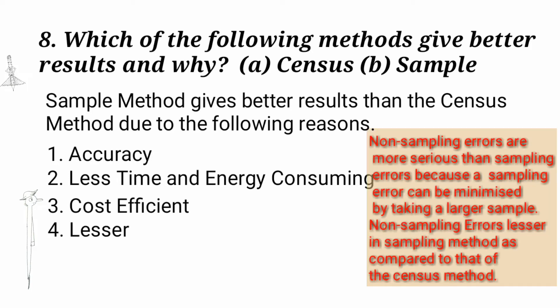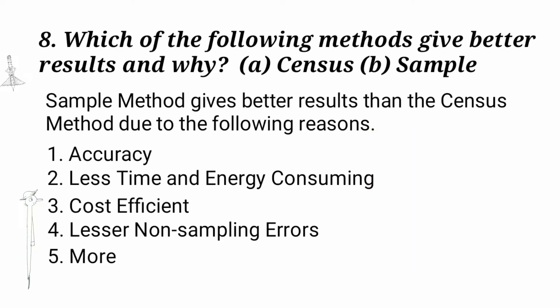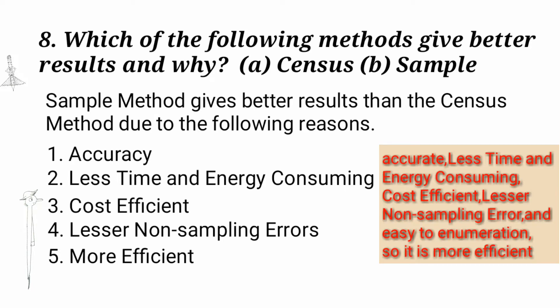Non-sampling errors are more serious than sampling errors, because a sampling error can be minimized by taking a larger sample. 5. Non-sampling errors are lesser in the sampling method as compared to that of the Census method. The sampling method is more efficient because it is accurate, less time and energy consuming, cost efficient, with lesser non-sampling errors and easy to enumerate. So, it is more efficient.